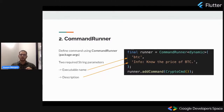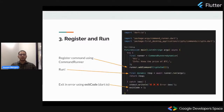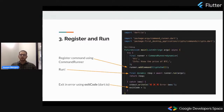The third step is to register and run. We register our crypto command using the runner from the CommandRunner package. Using this, we register that our CLI will respond to the crypto command, which includes the BTC command. For use cases where the user doesn't type the correct command, we first print out the error and then exit the CLI using exit code from the dart:io package. Exit code 1 means terminate the application.